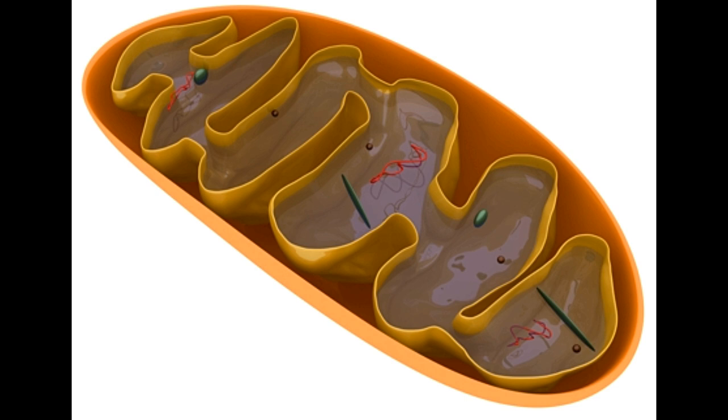Contraction is triggered through an action potential that is initiated by the pacemaker cells of the sinoatrial SA node or atrioventricular AV node. Owing to the presence of intercalated discs and gap junctions, the action potential quickly spreads to other cardiac cells. Thus, the muscle cells get excited and contract as a single unit called the functional syncytium.